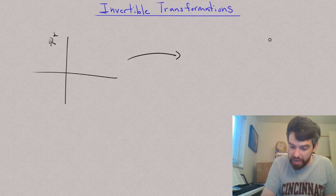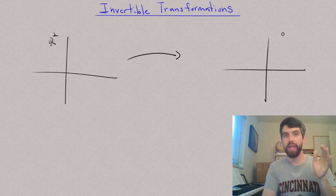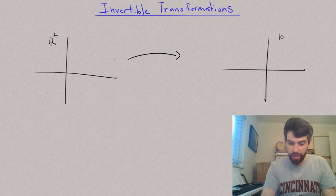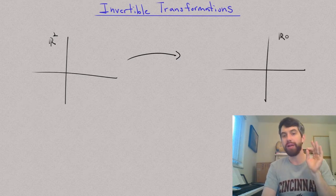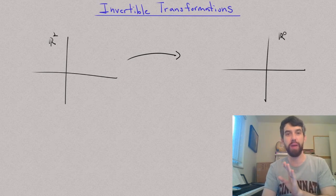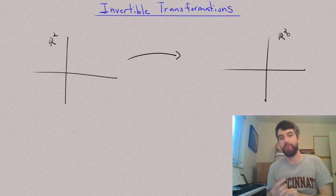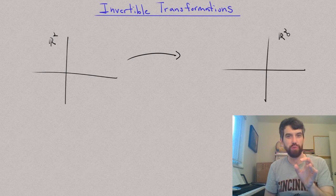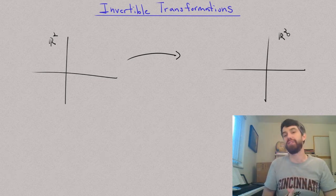And then I'm going to transform it and I'm going to have some codomain. And this codomain could be anything as well, but it has to be the same thing as the domain. If I began in R2, I'm going to end up in R2. If I began in Rn, I'm going to end up in Rn. The analog of demanding that my invertible matrices were square is saying that my domain and my codomain have the same dimension.